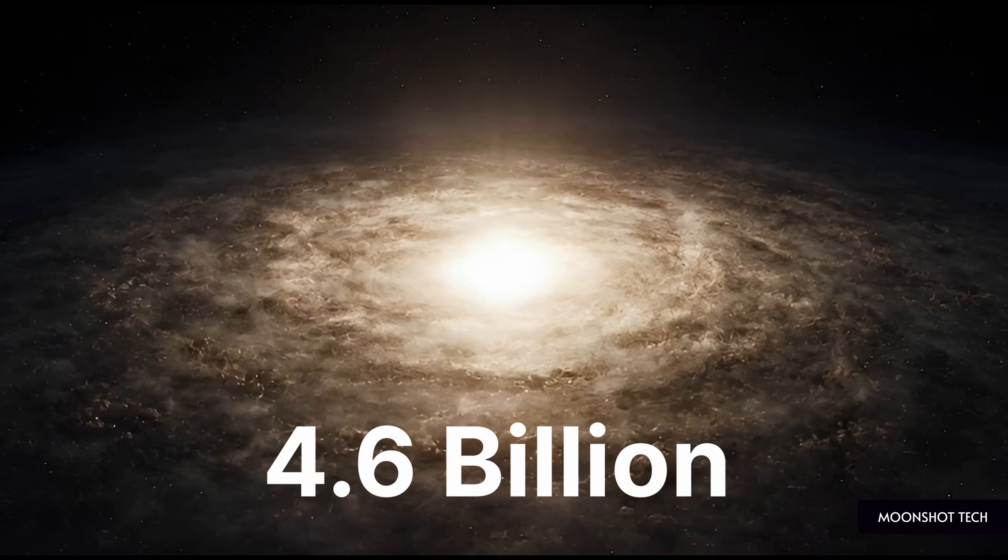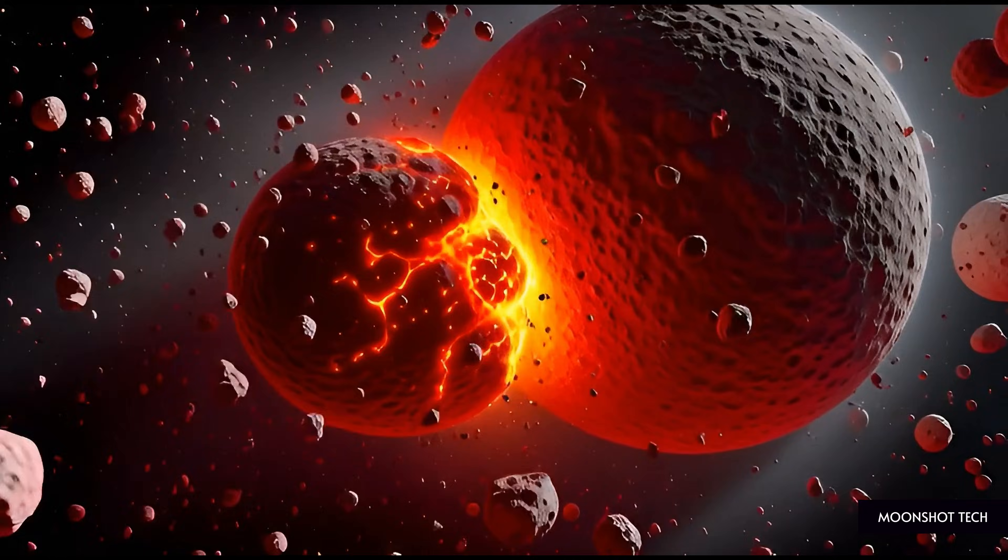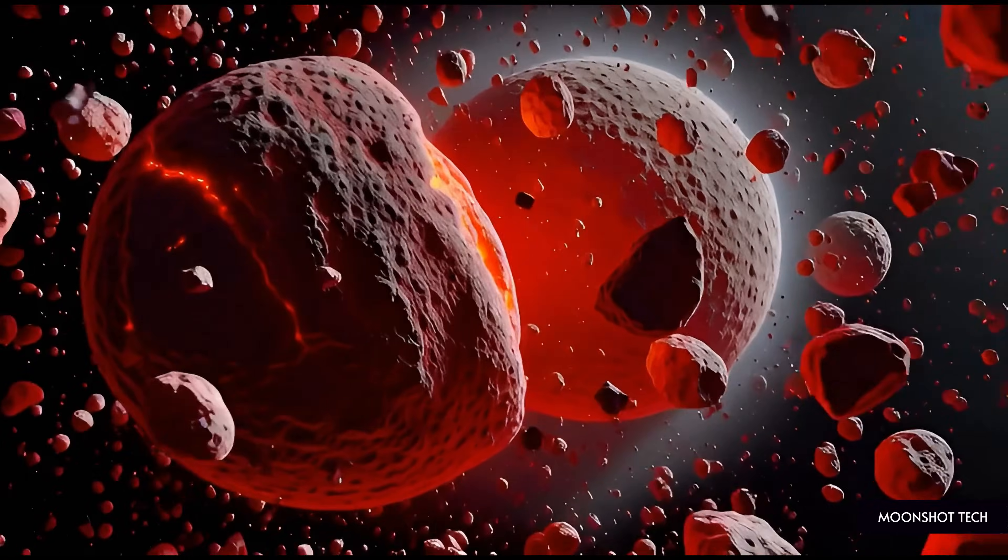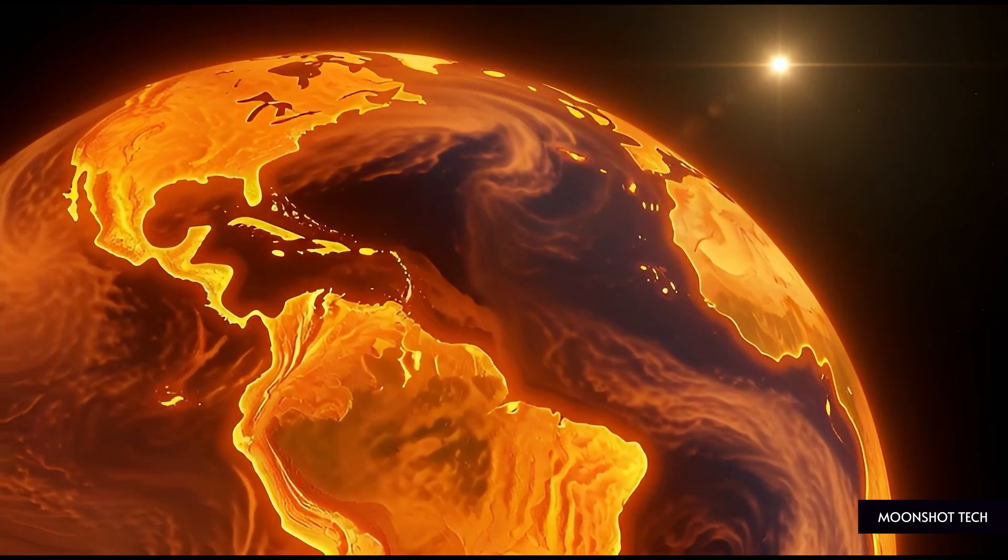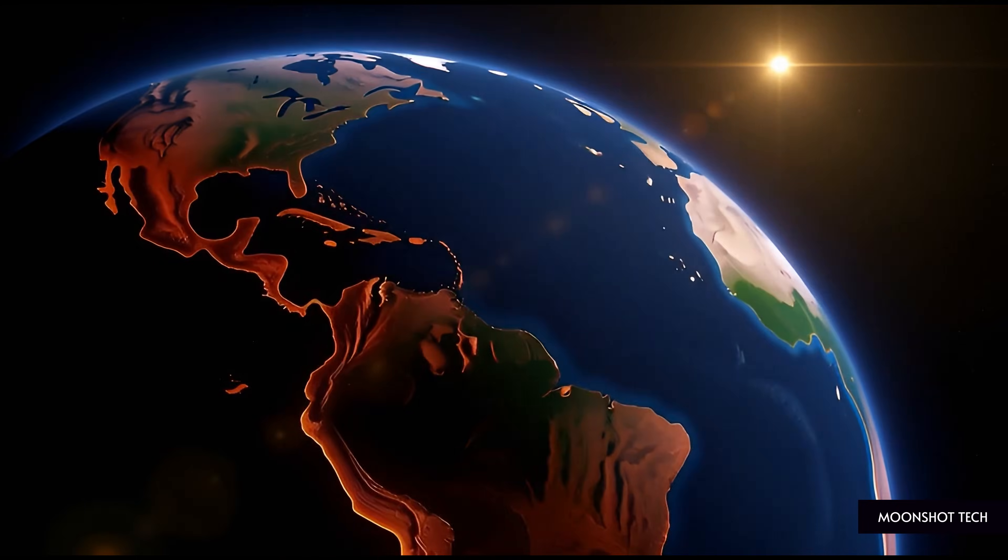Everything in our solar system is 4.6 billion years old. Every planet, every asteroid, every grain of dust, all formed together when the Sun was born. That has been our cosmic boundary. Until now.